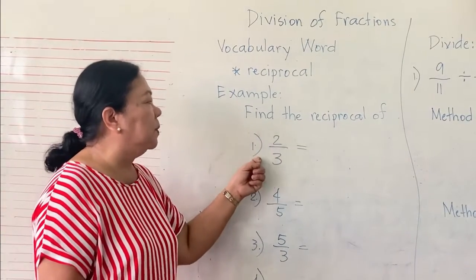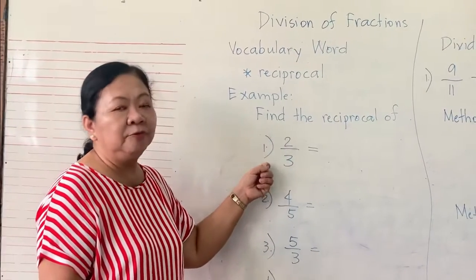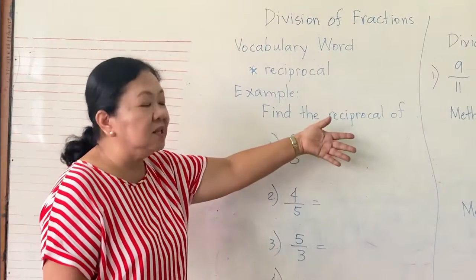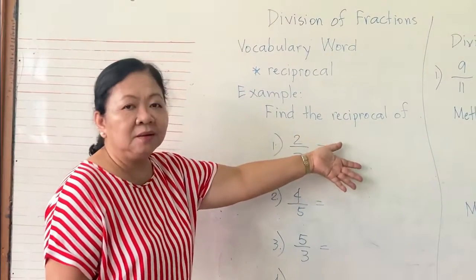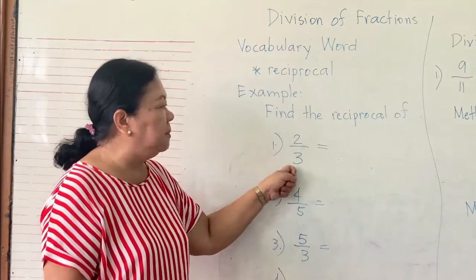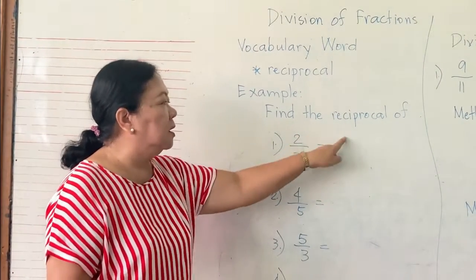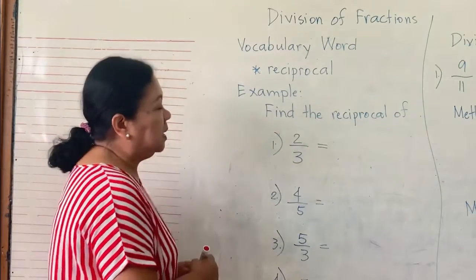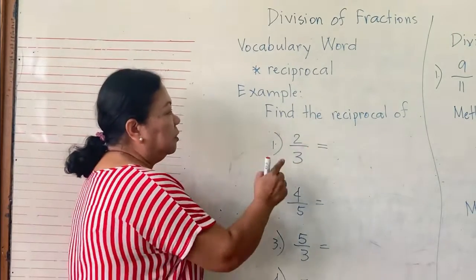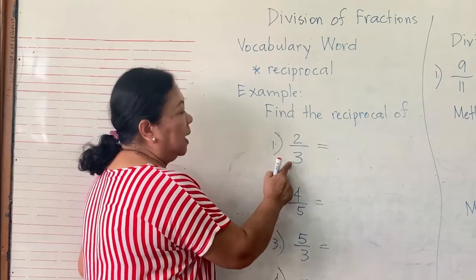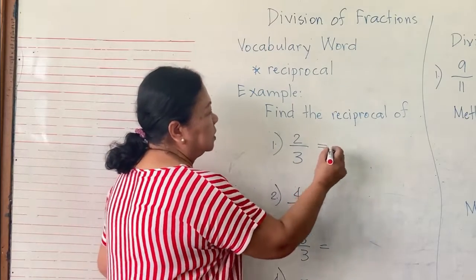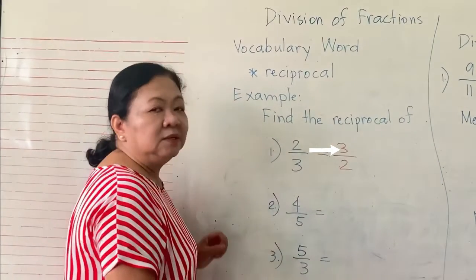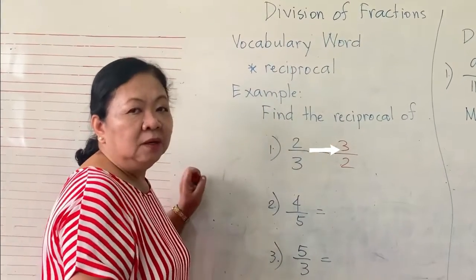Find the reciprocal of two terms. When you say reciprocal, you will just invert — you will write the denominator on the numerator and the numerator on the denominator. Therefore, the reciprocal of two-thirds is three halves, or three over two.